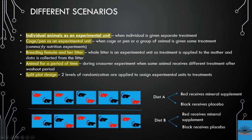There is another scenario involving breeding females, where the treatment is assigned to the breeding female but data is collected from her litter. In that case, the whole litter is considered the experimental unit, because one litter might have five animals and another might have six or two animals.